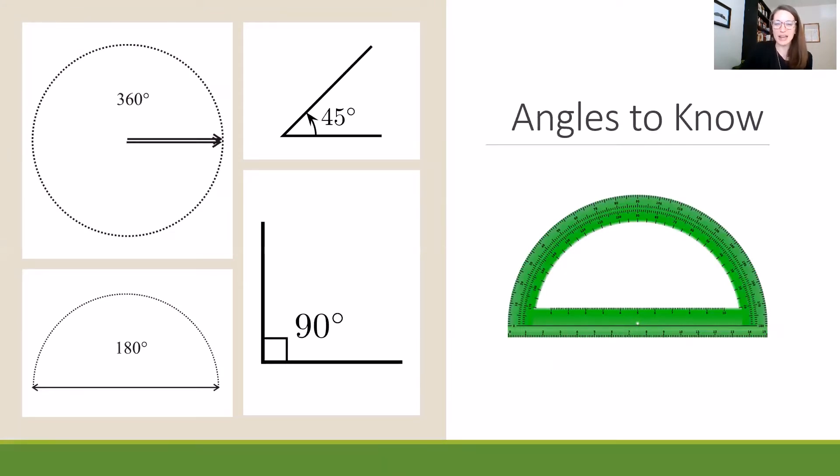On the screen here, there are some important angles to know, and there's also a tool that you might recognize there in green. That is a protractor, and it's a way of measuring how big an angle is. If you put one flat line of the angle on the bottom, then you can see on the degrees marked around the top how big or small the angle is.